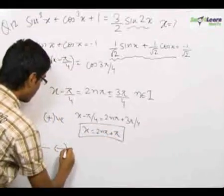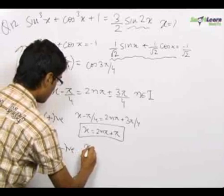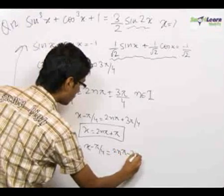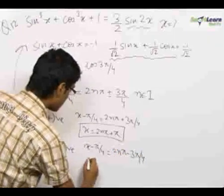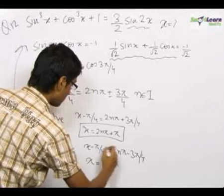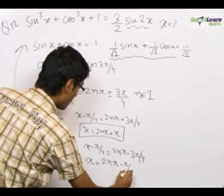On taking the negative sign, we get x - π/4 = 2nπ - 3π/4, which gives the solution as x = 2nπ - π/2.